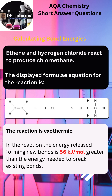The question shows how ethene reacts with hydrogen chloride to produce chloroethane. The display formula for the reaction is on the screen. AQA informs you that the reaction is exothermic — heat is released. Additional information states that the energy released to form new bonds was 56 kilojoules per mole greater than the energy needed to break existing bonds.